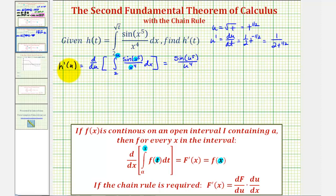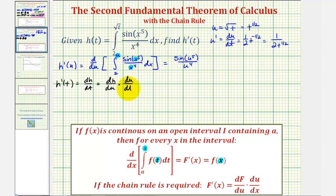So this would give us sine u to the fifth divided by u to the fourth. But notice how this is h prime of u, and we're looking for h prime of t. This is where we apply the chain rule. So dh/dt is equal to dh/du, or h prime of u, times du/dt, or u prime, which we have over here on the right.